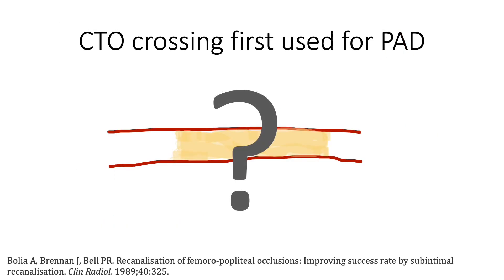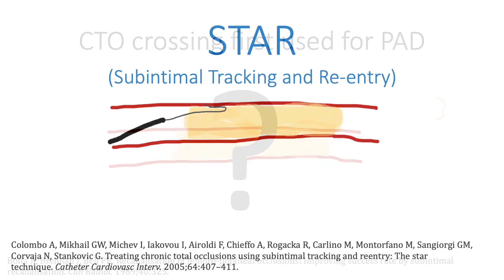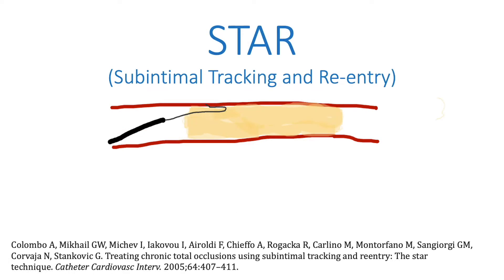There are a variety of techniques to cross a chronic total occlusion. Many were originally performed in peripheral arterial disease interventions. Many require entering the subintimal space before re-entering the true lumen. In the STAR technique, or subintimal tracking and re-entry, the distal tip of a hydrophilic wire can be shaped into a J-loop and advanced into the subintimal space.